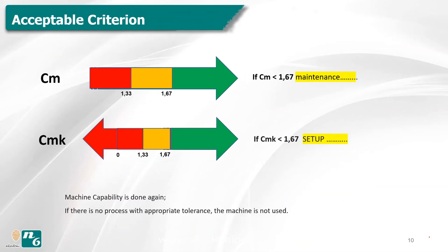What are the acceptable criteria? For an acceptable machine capability study, both CM and CMK must be greater than 1.67. If CM is less than 1.67, the machine needs maintenance. If CMK is less than 1.67, the machine setup must be redone. After completing maintenance or setup according to the CM and CMK values, the machine capability study is performed again. If there is no process with appropriate tolerances, the machine is not used on that process in the factory. If the machine meets the requirements of the capability analysis, you must proceed to process capability analysis.